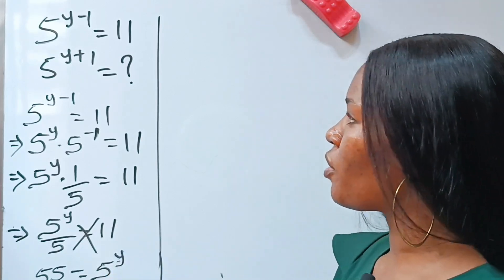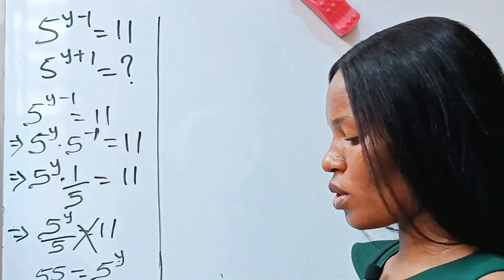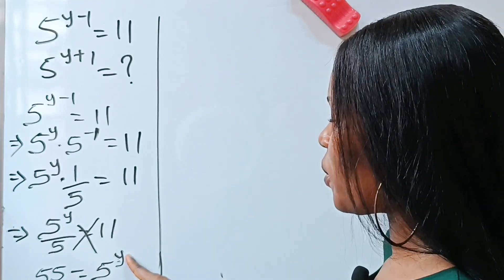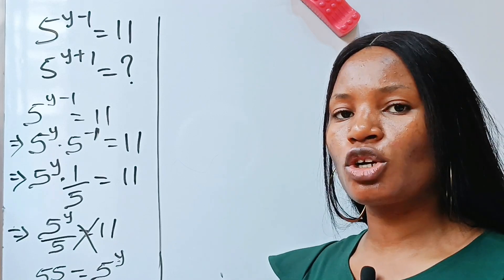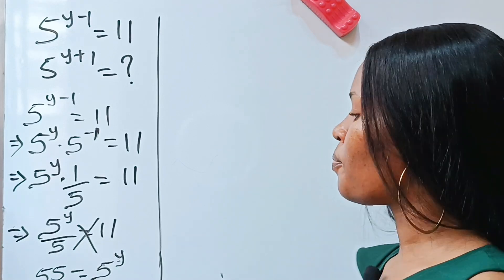Now recall that we are looking for the value of 5 to the power of y plus 1. So all we need to do here is to add plus 1 here. And to add plus 1 here simply means multiplying both sides of this equation by 5.